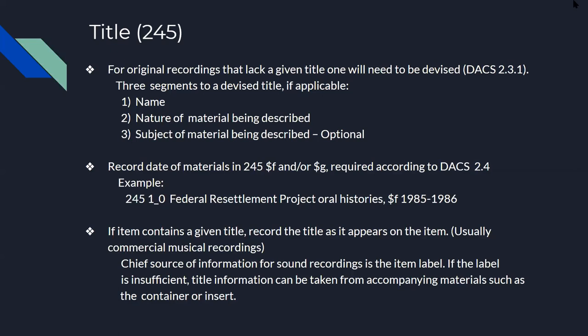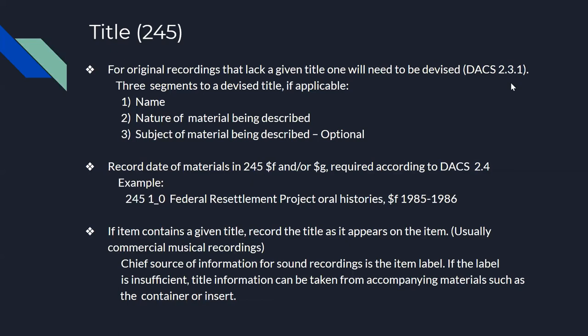DACS also requires the date or dates of materials to be added. For collections, dates can be added in subfield F and G of the 245. Subfield F is for inclusive dates and subfield G for bulk dates. You can use inclusive dates on their own. If the item has a given title, like a commercially produced musical recording, record the title as it appears on the item. The chief source of information for sound recordings is the item label; if insufficient, title information can be taken from accompanying materials such as the container or insert.